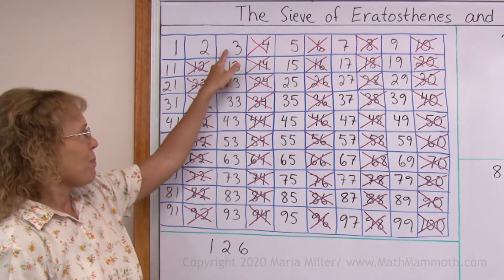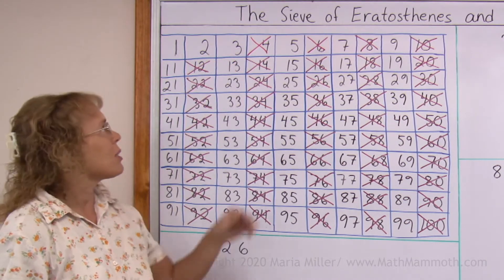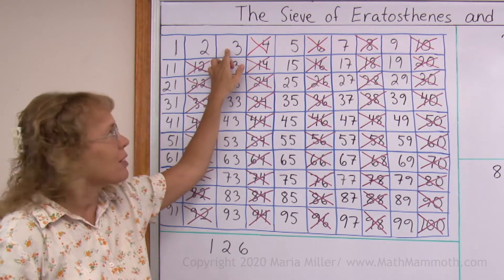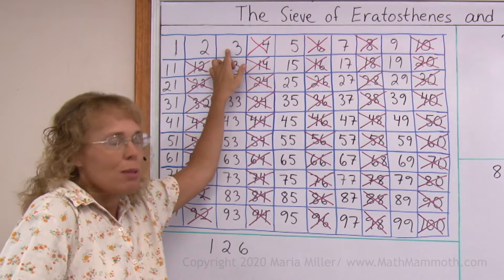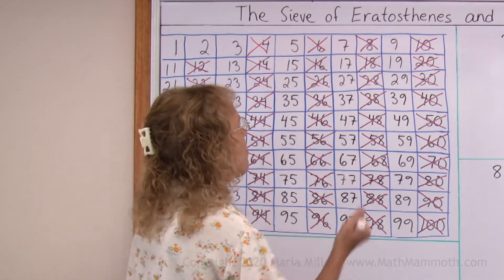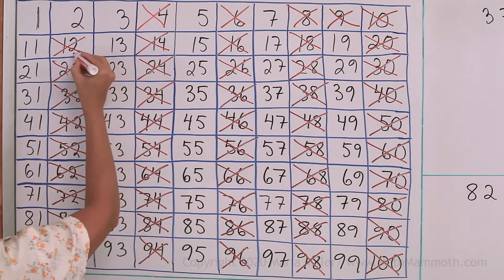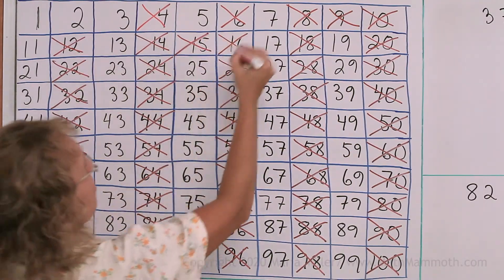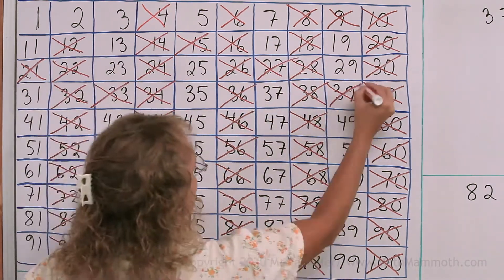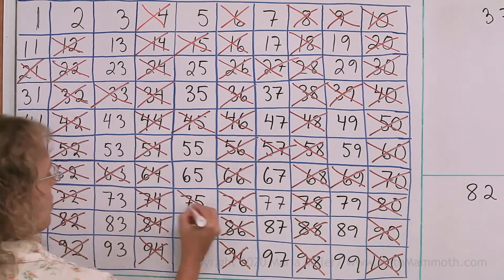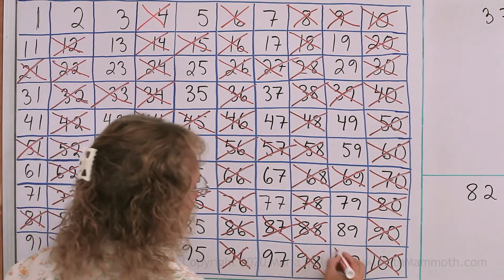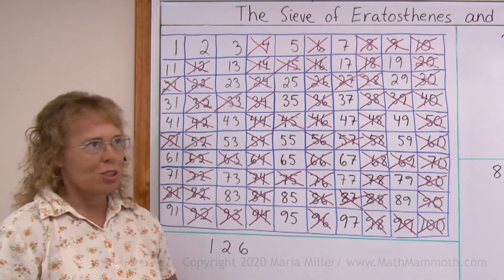Now I go to 3. 3 is prime, so I'll leave it. But I'm going to cross out all multiples of 3. I just think of the multiplication table of 3 and go along and cross out: 6 — well, it's already crossed out — then 9, 12, 15, 18, 21, and so on... 93, 96, and 99. All the multiples of 3 are now crossed out.